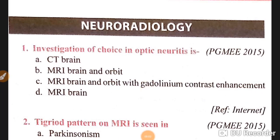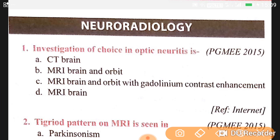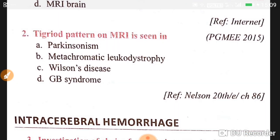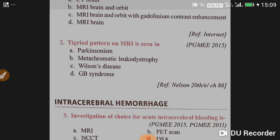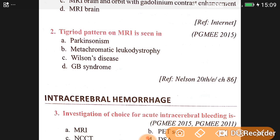Good afternoon doctors, welcome again. Today's topic is neuroradiology. Question number one: the investigation of choice in optic neuritis is MRI brain and orbit with gadolinium contrast enhancement.